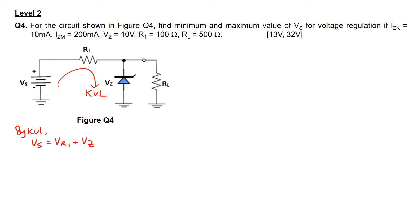From here we ask ourselves what are the fixed values. Since Vz is given as 10 volts, Vz is a fixed value. To find the minimum as well as maximum value for Vs, the unfixed value — the value that actually changes — is Vr1. So Vr1 is the unfixed value, and we go one step further to find the equation for Vr1.